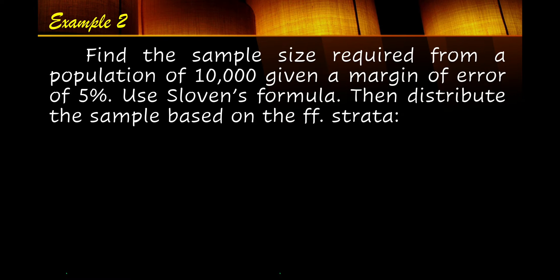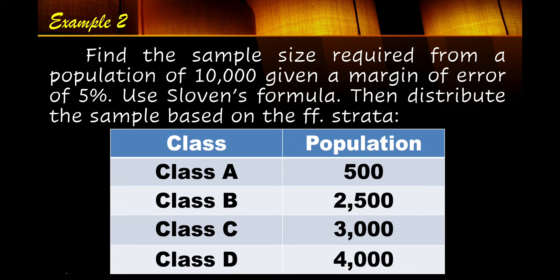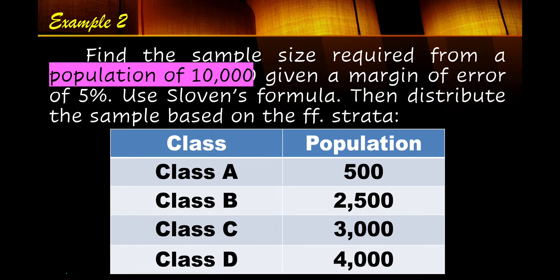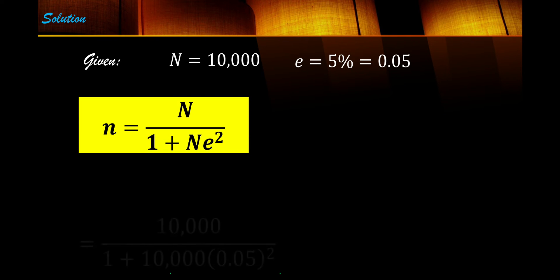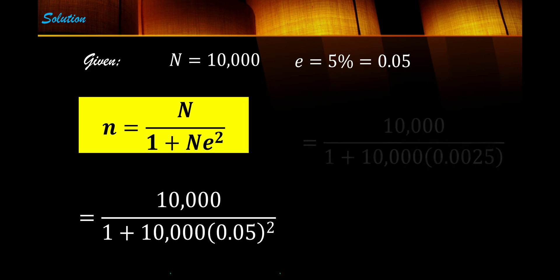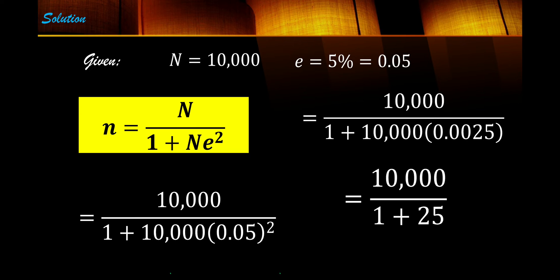Next, find the sample size required from a population of 10,000 given a margin of error of 5%. The population is 10,000 and the margin of error is 5% or 0.05. Using Sloven's formula, substitute N equals 10,000: 0.05² equals 0.0025 times 10,000 equals 25, and 1 plus 25 equals 26. So 10,000 divided by 26 equals 385. Therefore, we need only 385 samples from 10,000.